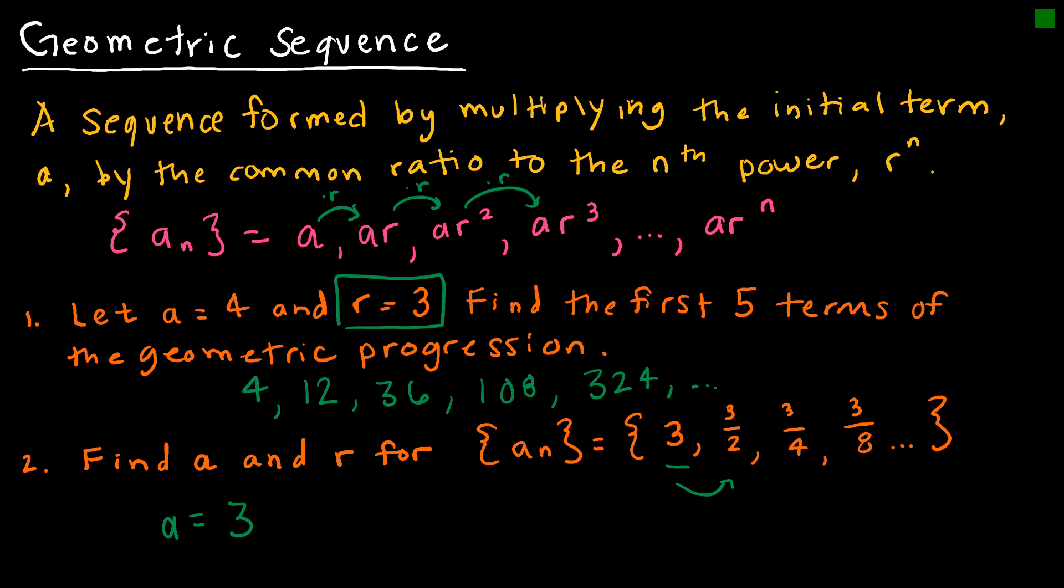So to get from 3 to 3 halves it looks like I divided by 2. The problem with that though is remember with a common ratio we're looking at what did we multiply by. So instead of saying dividing by 2, I'm going to say I multiplied by 1 half. And then I wanted to just check it and make sure. 3 halves times 1 half, does that give me 3 fourths? Yes it does. 3 fourths times 1 half, does that give me 3 eighths? Yes it does. And so my common ratio is 1 half.